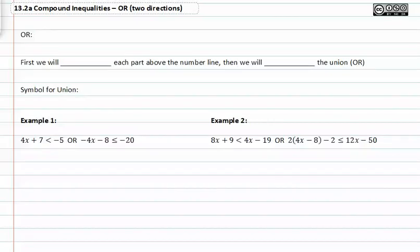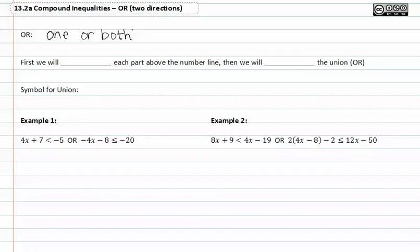With compound inequalities, it's important to remember that 'or' can mean one or both. First, we will float each part above the number line. What that means is we're going to have to solve the inequalities and graph them, but the first time we'll graph them as they're floating above the number line.